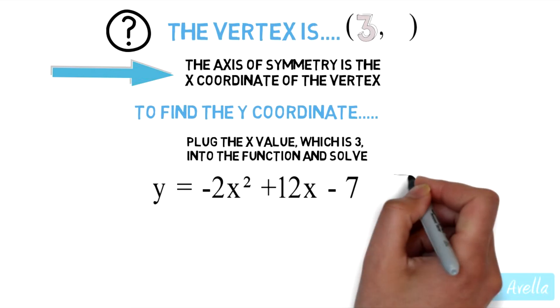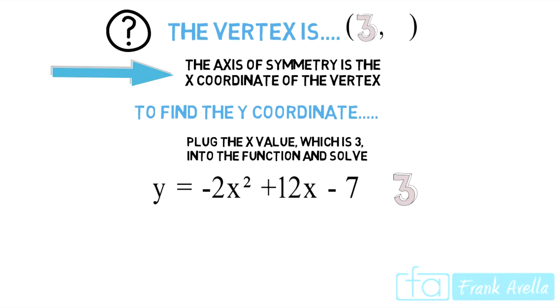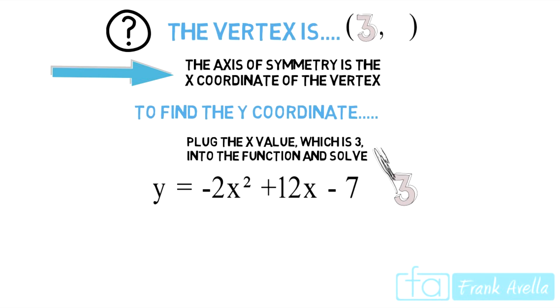Our x value is 3, so that's the value we're going to plug in for x in our given function. Here you see 3 is going to be plugged into the first x squared and plugged into the second x, x to the first power.